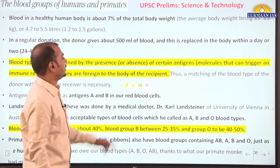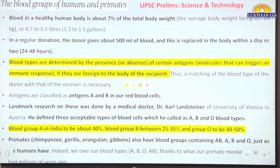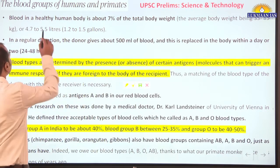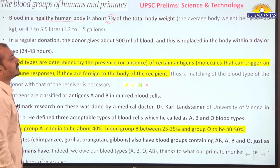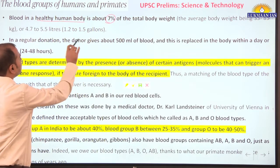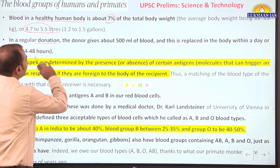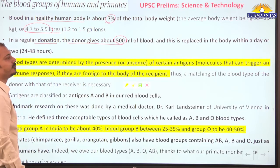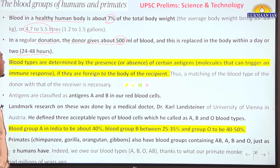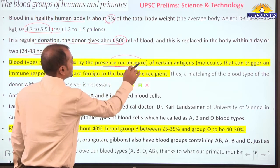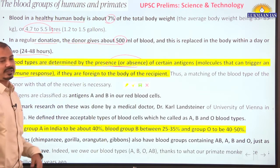Blood groups of humans and primates: basic information from biology perspective. Blood in a healthy human being is about 7 percent of total body weight — around 4.7 to 5.5 liters. In regular blood donation, a donor gives about 500 ml of blood, which is replaced in the body within a day or two. Blood types are determined by the presence or absence of certain antigens — Antigen A or Antigen B. These molecules trigger an immune response and are called antigens.